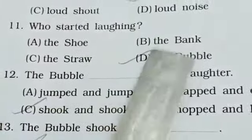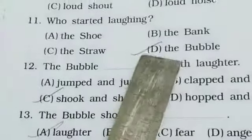11. Who started laughing? A. The shoe, B. The bank, C. The straw, D. The bubble. Correct answer, D, the bubble.